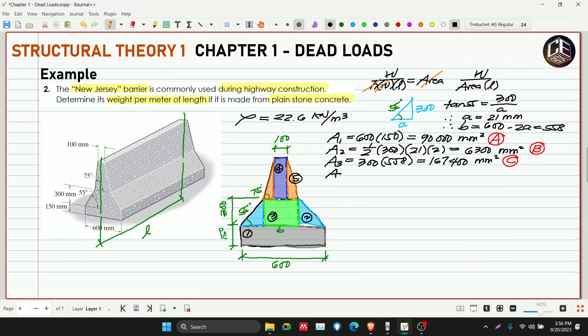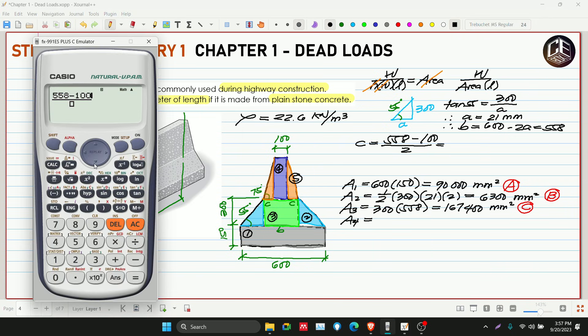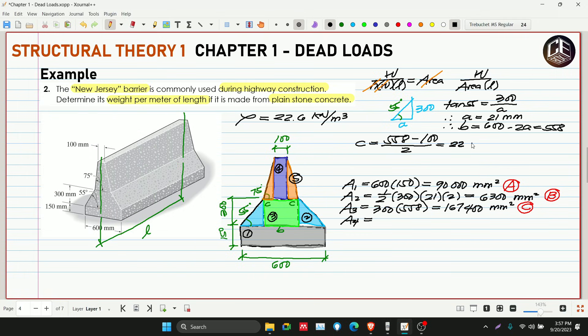Next, area 4. Wala tayong height, wala rin tayong base. Ito, this is 558. Tapos ito 100. So makukuha natin ito, let's say this is C. Tidalawa. So yung ating base is 558 minus 100 then divided by 2. So letter C, C is equivalent to yung B natin na 558 minus 100, divided by 2 kasi dalawa yung ating C. So 558 minus 100 over 2, this is 229 millimeters.